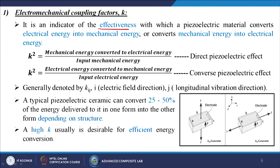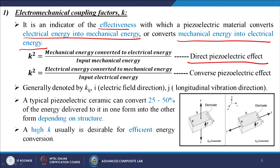The electromechanical coupling factor k is an indicator of the effectiveness with which a piezoelectric material converts electrical energy into mechanical energy or vice versa. k² equals mechanical energy converted to electrical energy divided by input mechanical energy — essentially a measure of efficiency. It also equals electrical energy converted to mechanical energy divided by input electrical energy, which is the converse piezoelectric effect.